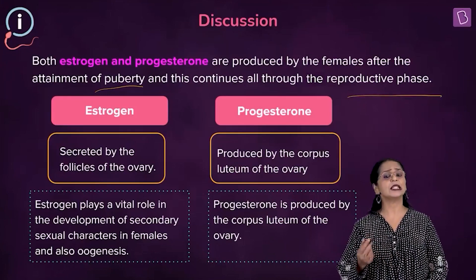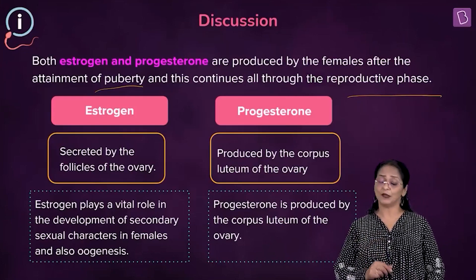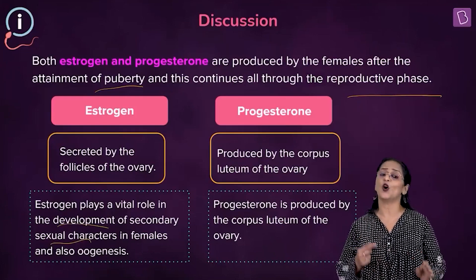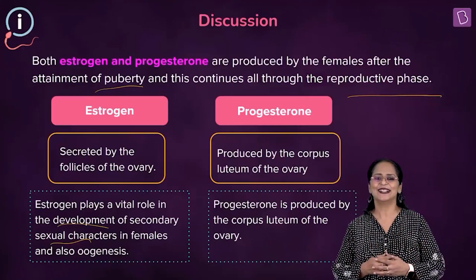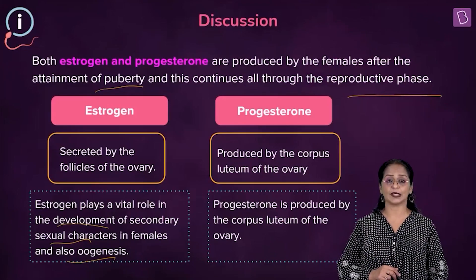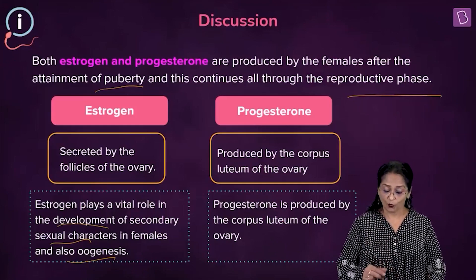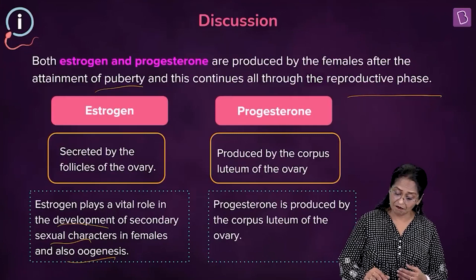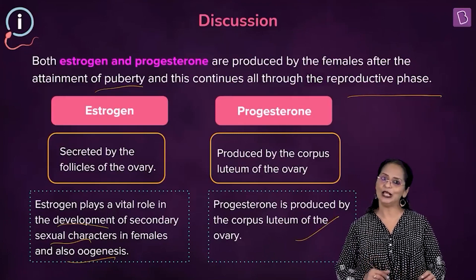Estrogen is secreted by the granulosa cells of the follicles — secreted by the ovary. It plays a major role in the development of secondary sexual characters of females, like development of the breasts, the rounded shape, a high-pitched voice. Estrogen also helps in oogenesis and in rebuilding the endometrium of the uterus. Progesterone is a pregnancy hormone which helps in maintaining pregnancy, and is produced by the corpus luteum of the ovary.